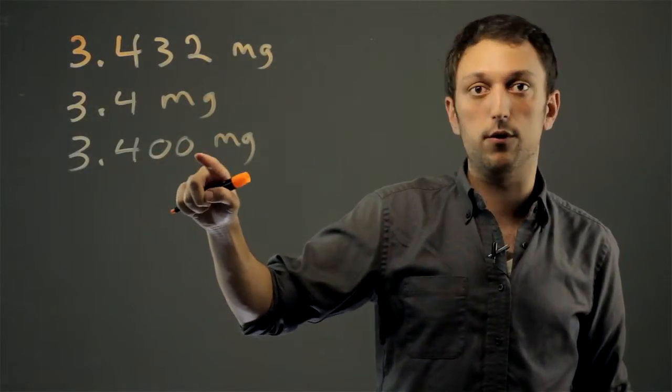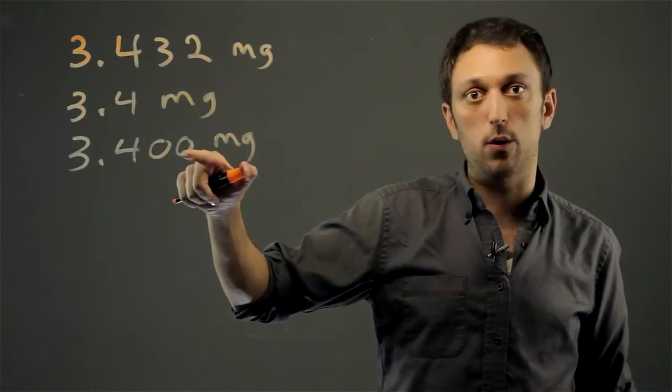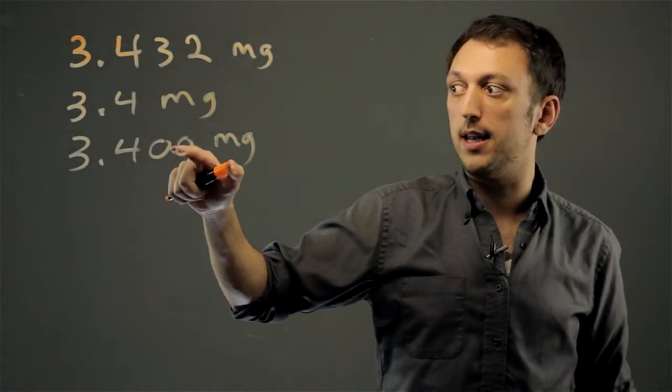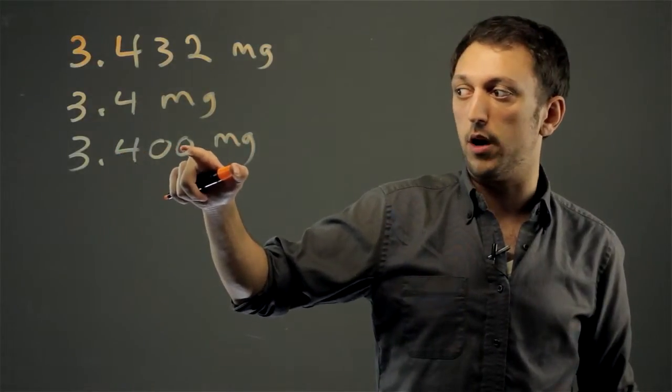these two zeros are the trailing zeros. They're obviously not adding value to the number, but they're showing everyone else that I decided I got a three decimal measurement and I wanted to round to